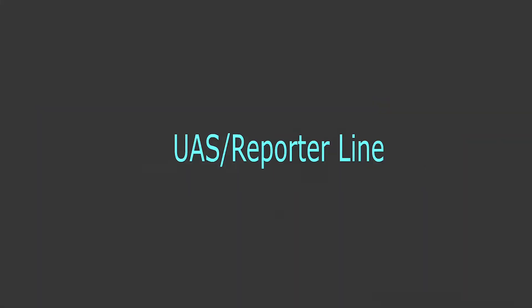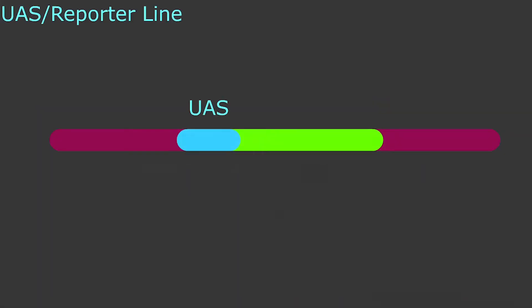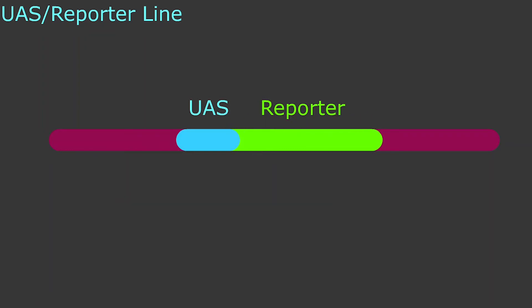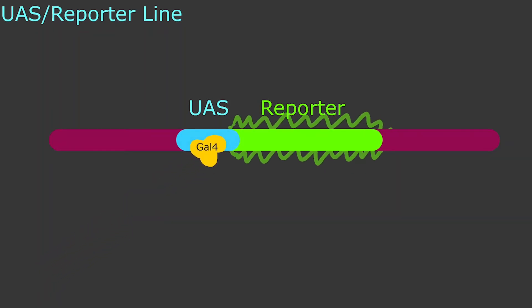The reporter or UAS line has a UAS region next to the gene that the researchers want to study, called the reporter gene. A common reporter gene is GFP, or green fluorescent protein, where when GFP is activated, it causes the cells to glow. UAS is all over the inside of the fly, but it can only be activated if it's bonded with a GAL4 protein.